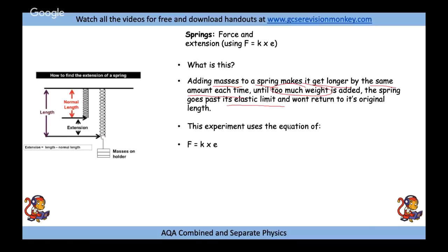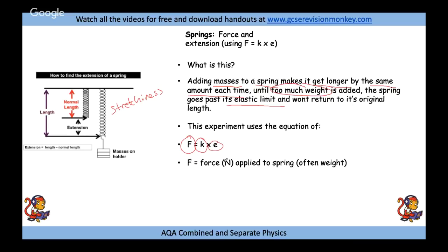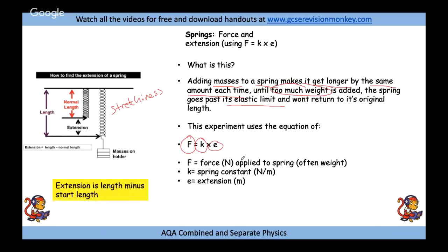The experiment uses F = kE, where F is the force applied to the spring, k is the spring constant — the 'stretchiness' of the spring — and E stands for extension, each with their respective units. To work out the extension of a spring, it's the new length of the spring minus the start length, so the extension is the difference between the two.